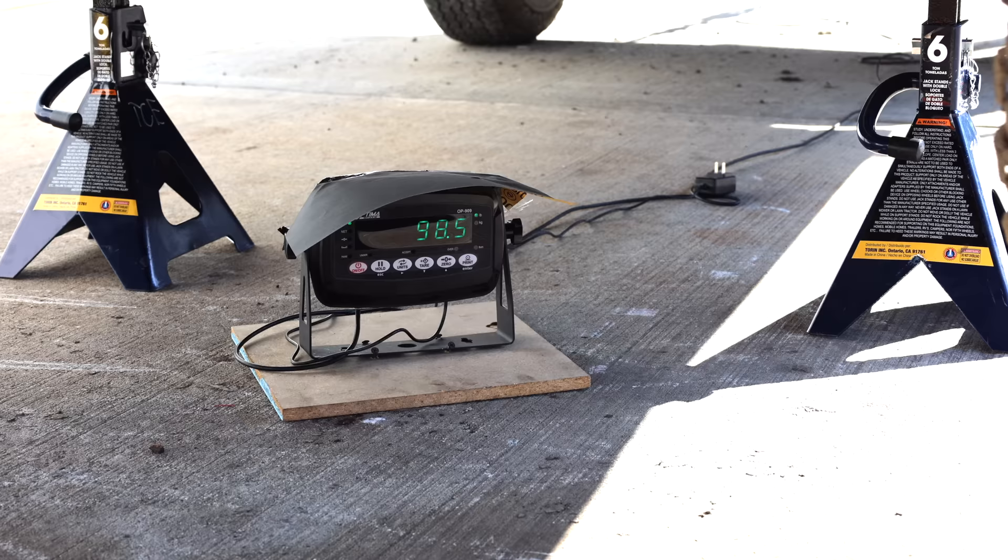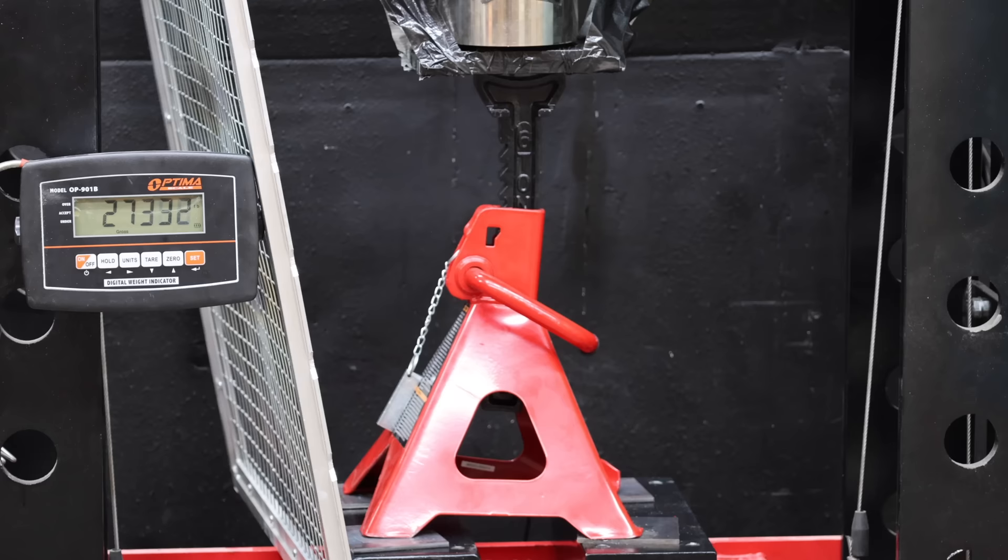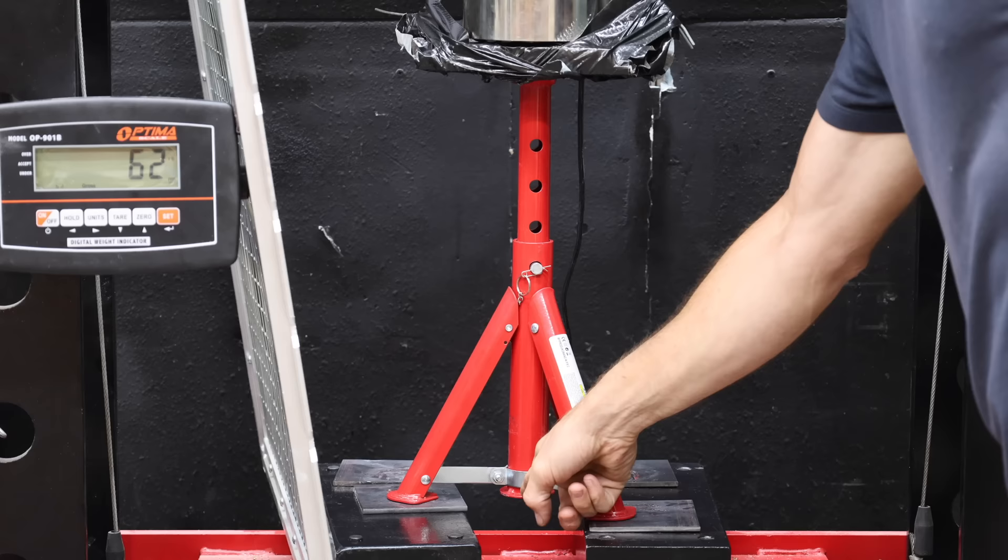I tested all the jack stands in several additional tests and all the jack stands besides the ZSP survived the test. Most of the jack stands took over 20,000 pounds to crush in a controlled straight downward direction. I repaired the ZSP and tested it once again. Parts were flying off the ZSP at around 5,000 pounds.